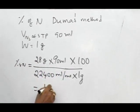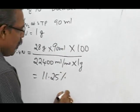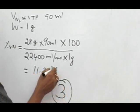we have 11.25% of nitrogen. So that is given in option 3, select option 3, 11.25%.